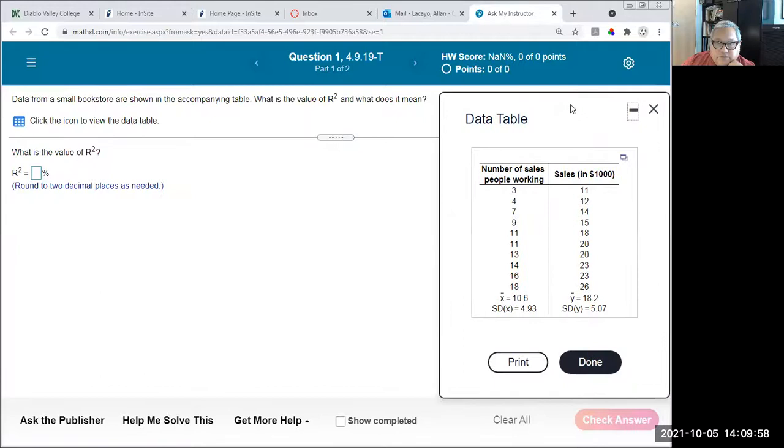So I will go to the Ask My Instructor feature question, which is what is the R-square for the data that is in this data table? So the first thing to do is open the data in StatCrunch.